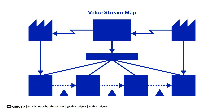Value stream mapping is defined as a lean tool that employs a flow chart documenting every step in the process. Many lean practitioners see the value stream map as a fundamental tool for identifying waste, reducing process cycle times, and implementing process improvements. It is a workplace efficiency tool designed to combine material processing steps with information flow along with other important related data.